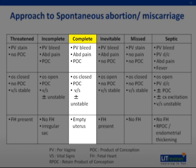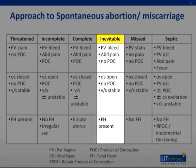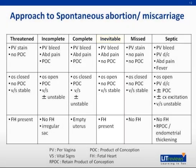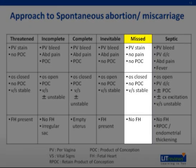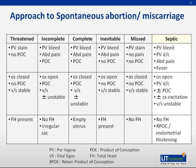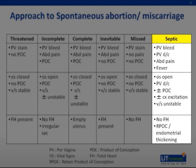A complete miscarriage may present similarly to an incomplete miscarriage, but on examination the cervical os is closed, and the scan shows an empty uterus. An inevitable miscarriage is diagnosed when the fetal heart is still present on scan, but the cervix is open. Patients with missed miscarriage usually present with per-vaginal staining, rarely lower abdominal cramps, but no passage of products of conception. On examination, the cervix is closed, and on scanning there are products of conception but no evident fetal cardiac activity. Lastly, a septic miscarriage is suspected when the patient complains of fever, foul-smelling discharge, and physical examination findings reflect a septic state.